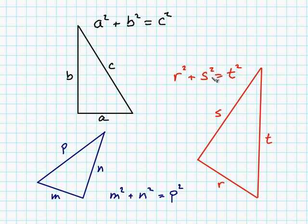You could also write the theorem in a different form. I could say that T, using this equation, is equal to the square root of R squared plus S squared.